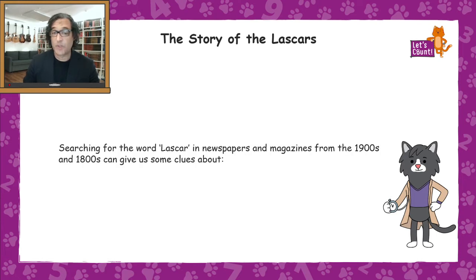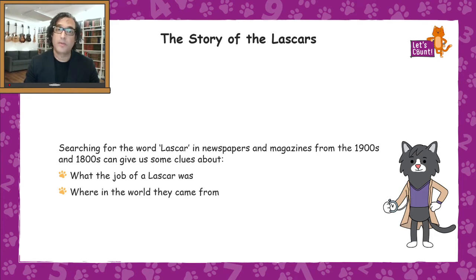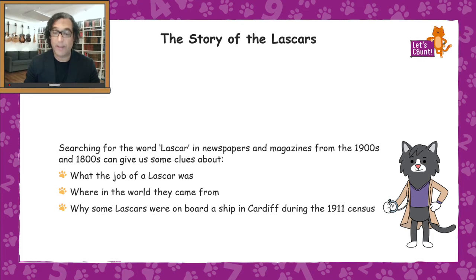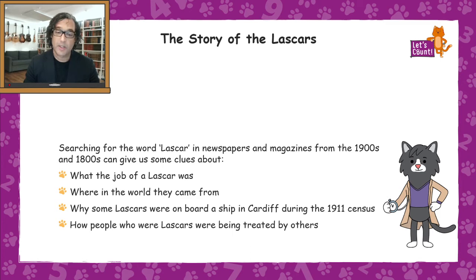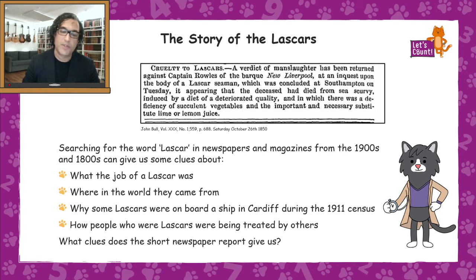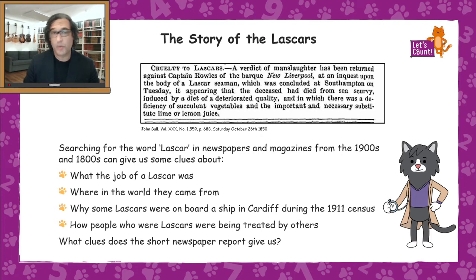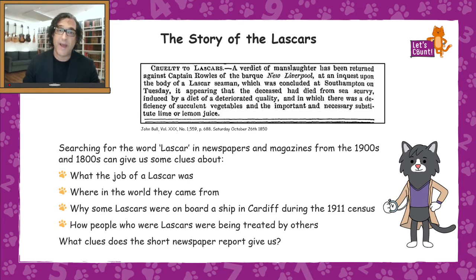Searching for the word 'Lascar' in newspapers and magazines from the 1800s and 1900s gives us clues about what the job of a Lascar was, where in the world they came from, and how Lascars were sometimes treated by others. One newspaper report titled 'Cruelty to Lascars' describes a verdict of manslaughter returned against a captain whose Lascar seaman died of scurvy — caused by a poor diet lacking vegetables and lemon or lime juice. He died because he wasn't being given the food he needed to stay well — he wasn't being treated well.